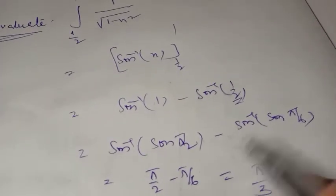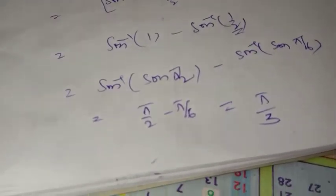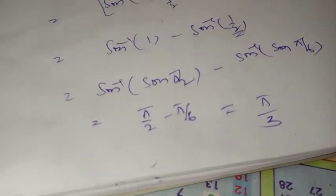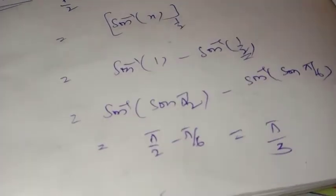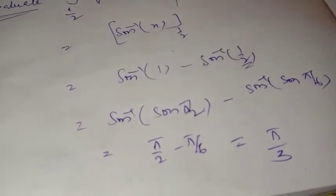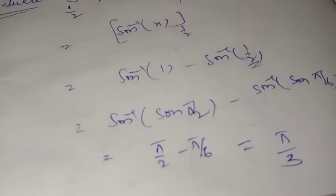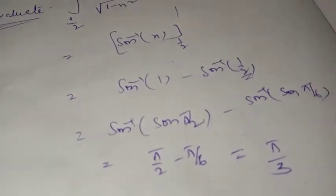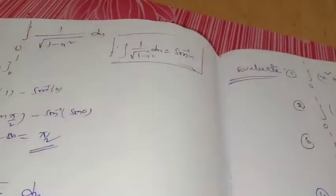90 minus 30 is 60 degrees, which is π/3. To solve these problems: substitute the upper and lower limits, find the values, and you will get the answer.